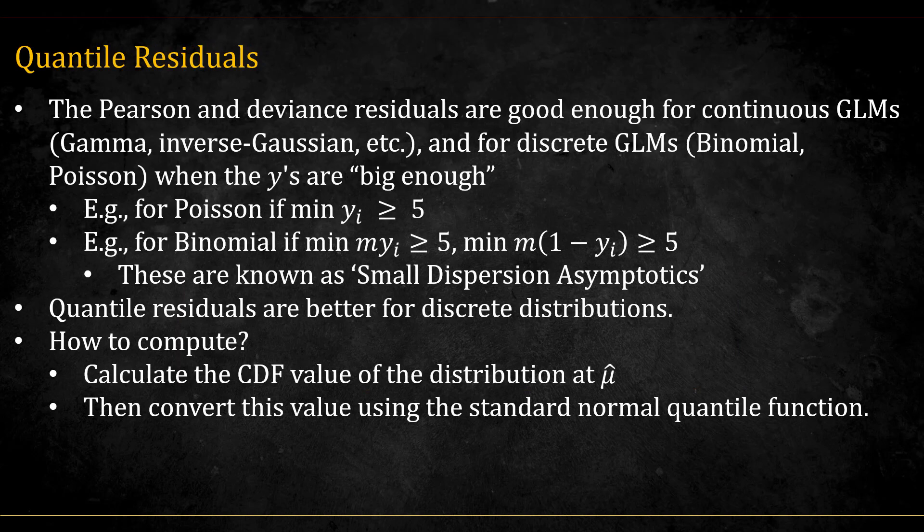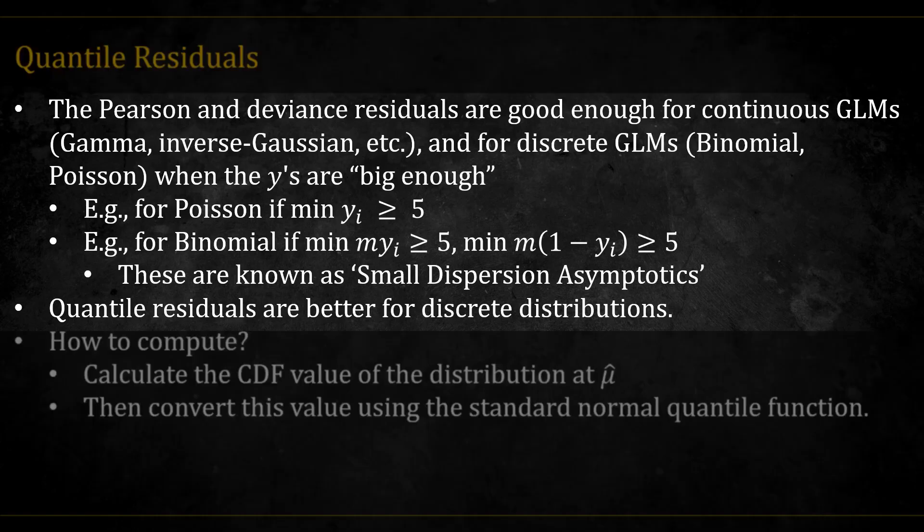Another type of residuals are called the quantile residuals. They can be used for all GLM distributions, but they are especially needed for discrete distributions. The Pearson and deviance residuals are good enough for continuous GLMs, like gamma, inverse Gaussian, etc. But for discrete GLMs, like binomial and Poisson, we need that the y's are big enough. Here are some rules of thumb to what is big enough in Poisson and binomial regression. These rules are part of what is known as small dispersion asymptotics. When these rules are not met, and generally for discrete distributions, it is recommended to use quantile residuals.